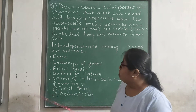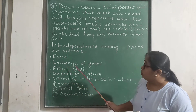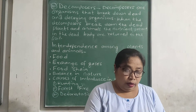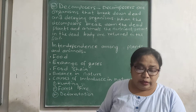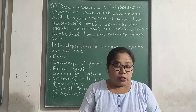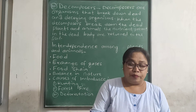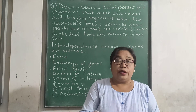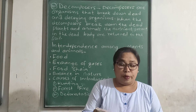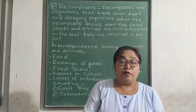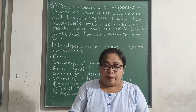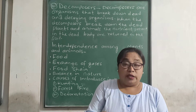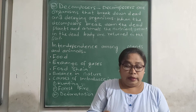Now let us discuss the exchange of gases. Plants and animals exchange gases. Plants produce oxygen for animals to breathe, and animals produce carbon dioxide which helps plants to produce their food. This way, plants and animals are interdependent on each other for their survival in the environment.